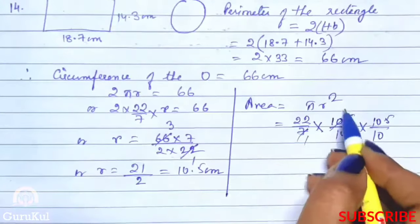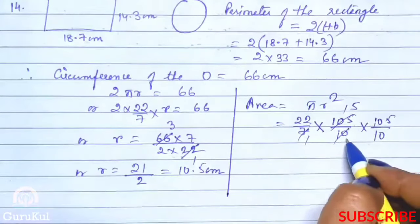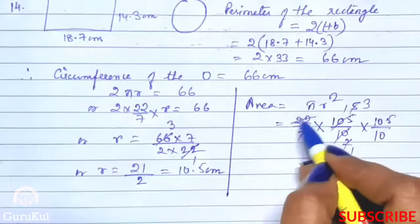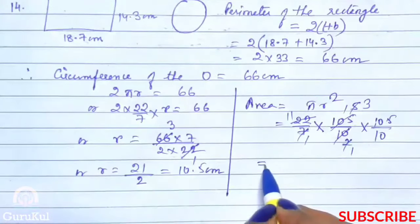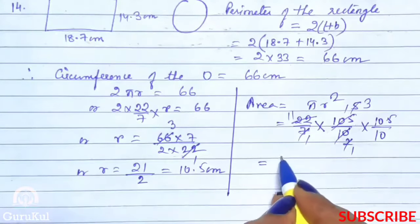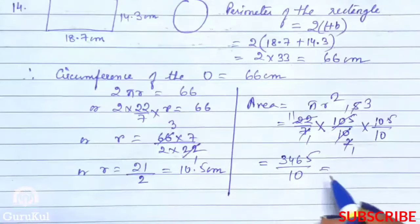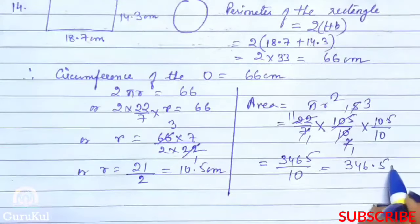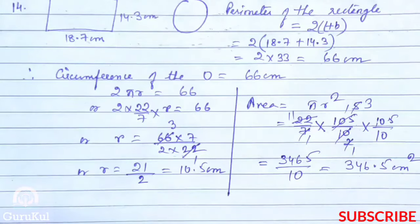Now let's calculate. 7 ones are, 7 fifteens are 105. 5 twos are, 5 threes are, 2 ones are, 2 elevens are. So our answer is 3465 by 10 which is 346.5 cm square is the area of the circle.